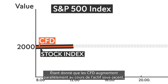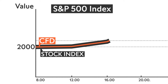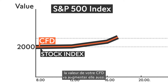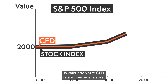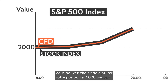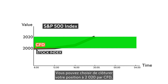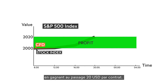Since the CFDs rise in parallel with the price of the underlying asset, the value of your CFDs rise too. You might choose to close your position again at US$2,020 per CFD, earning US$20 per contract.